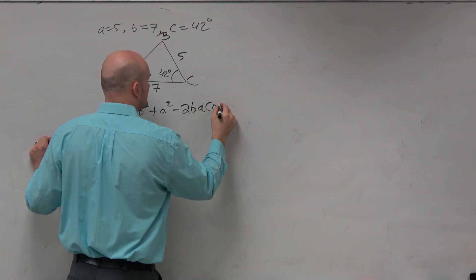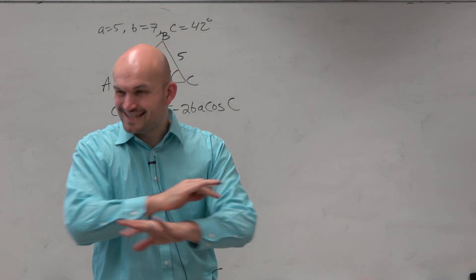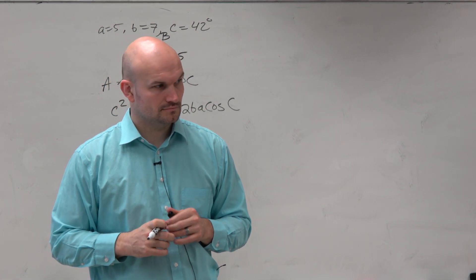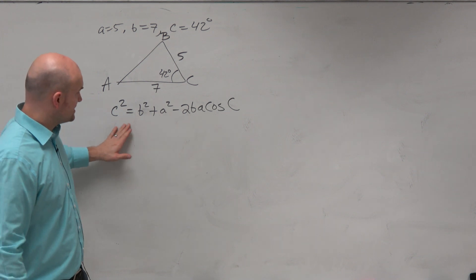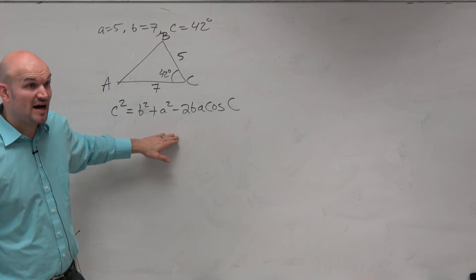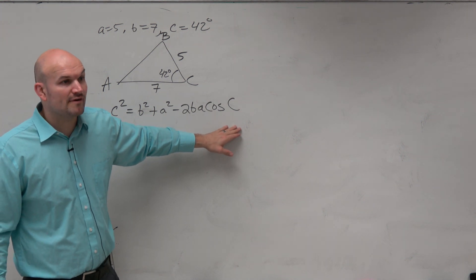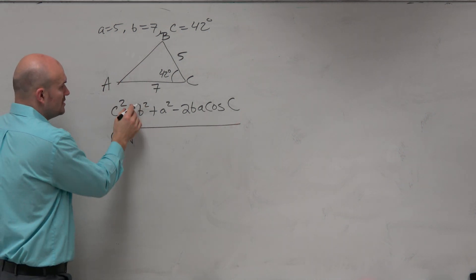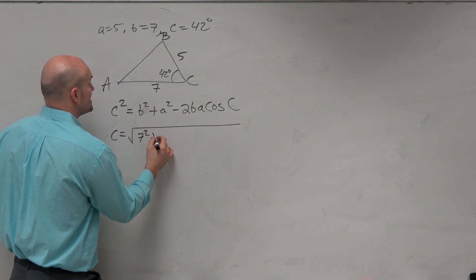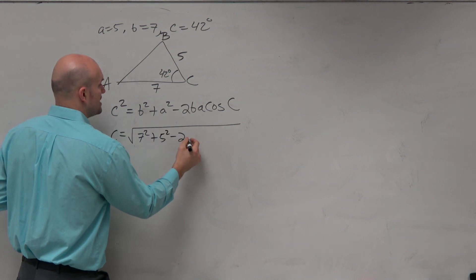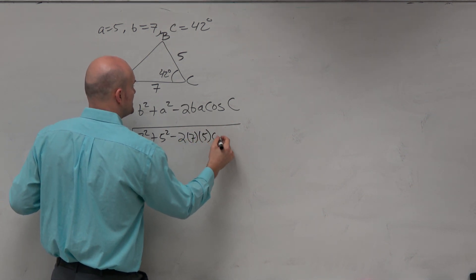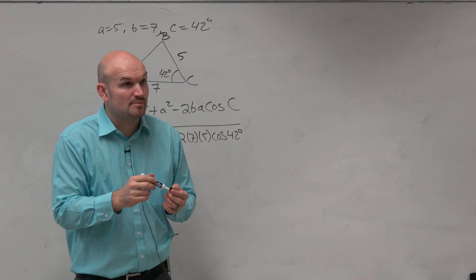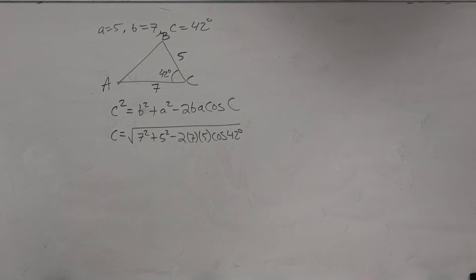No. So this is A times cosine of C. So if you look at the formula in your formula sheet, you'll see it's the exact same formula, just A and C are swapped. Now, the nice thing is, since this is all one expression here, the calculator, if I was to type this in directly how it is, the calculator would follow order of operations. So I'm just going to type this in as one big expression.